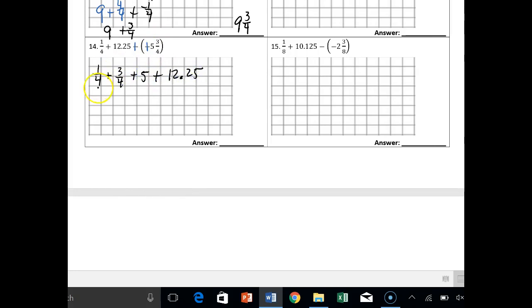So 1 fourth plus I'll split that up into 3 fourths plus 5 plus 12.25. 1 fourth plus 3 fourths is 4 fourths which you know eventually will be 1. This is 1 plus 5 plus 12.25, and 1 plus 5 is 6 plus 12.25.